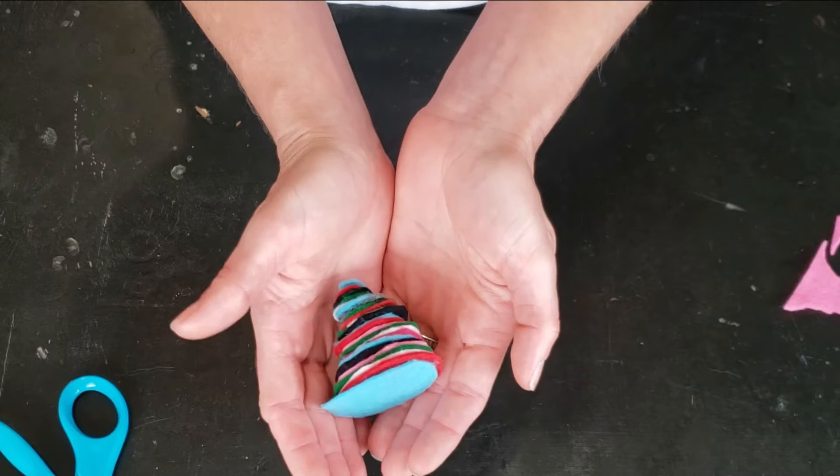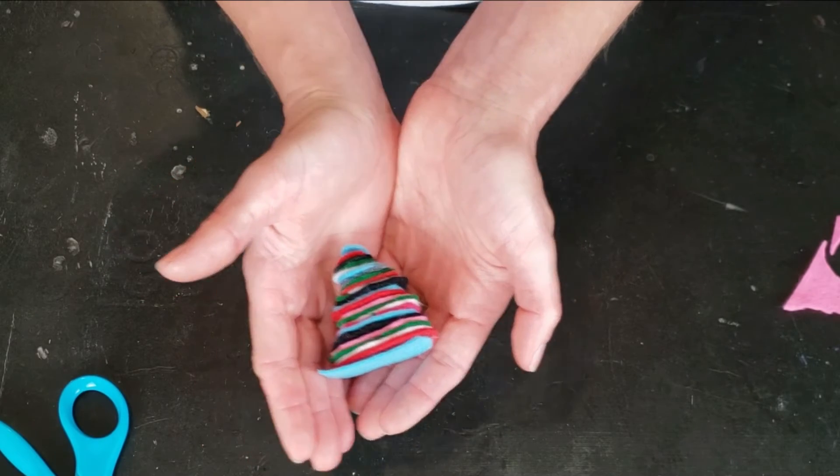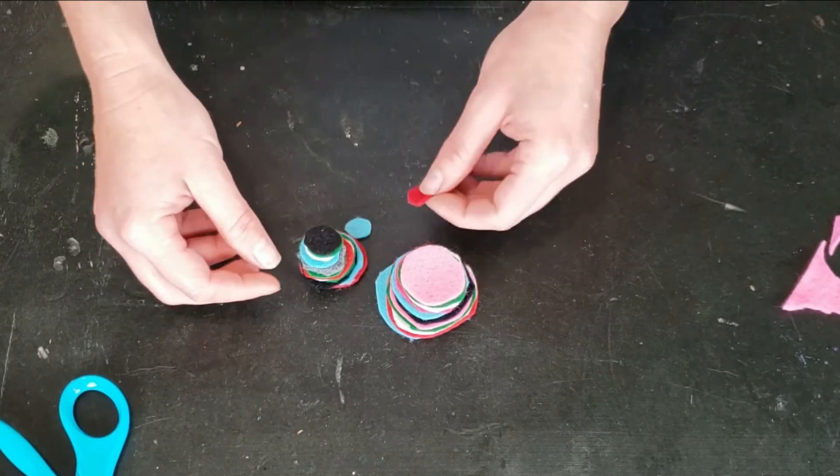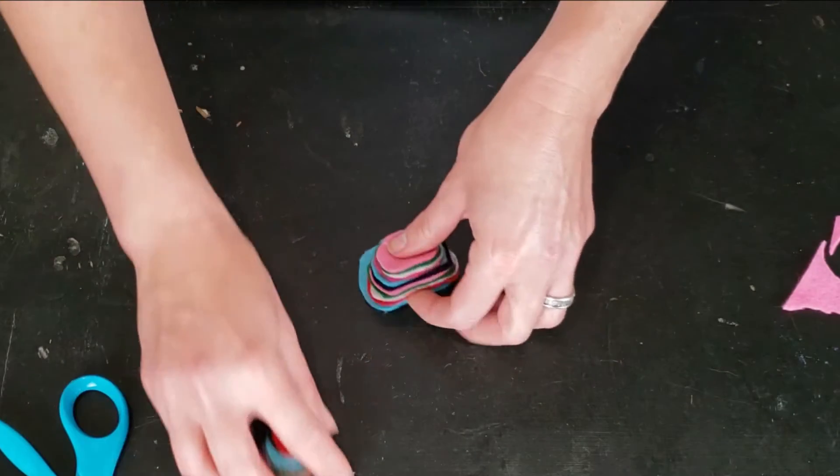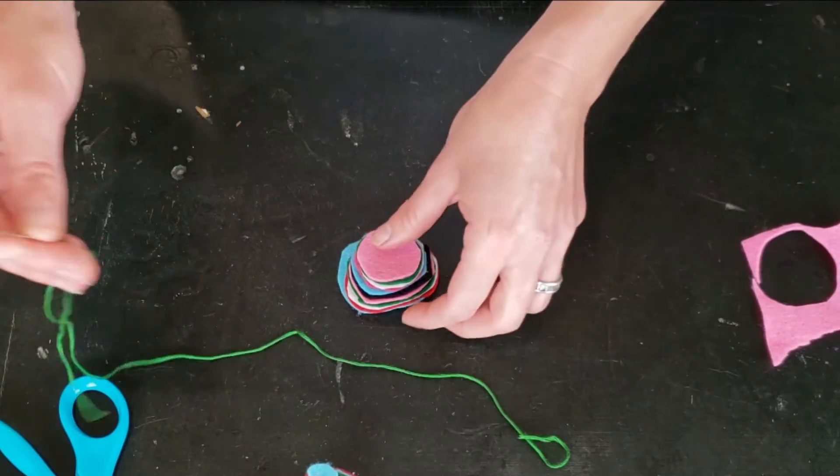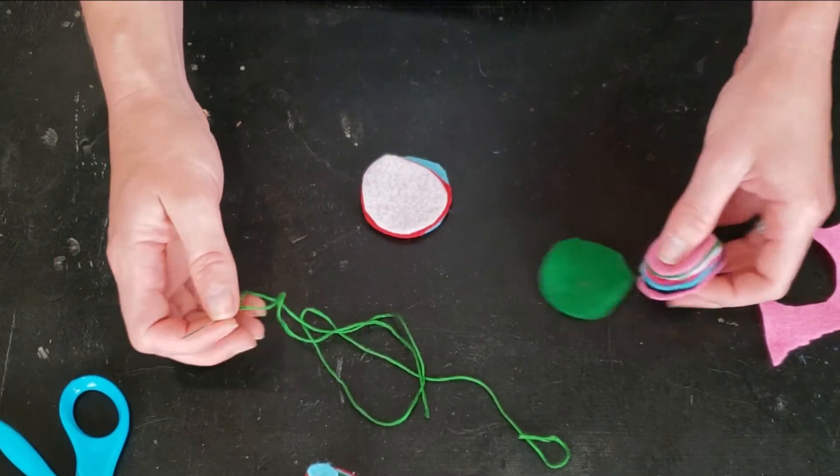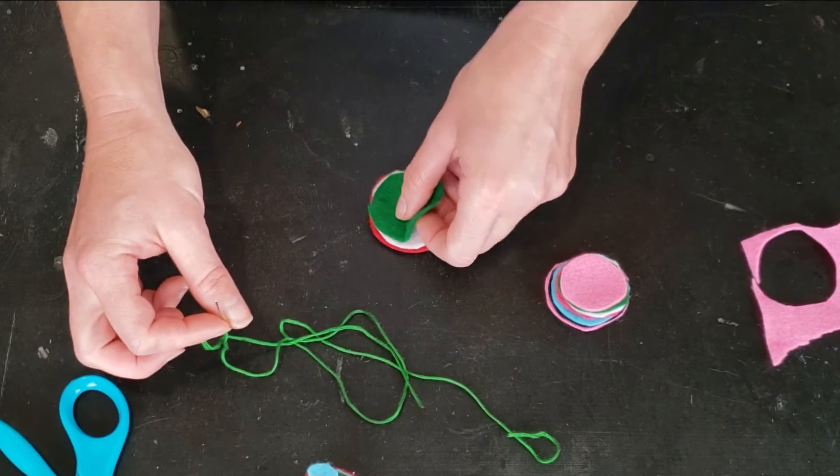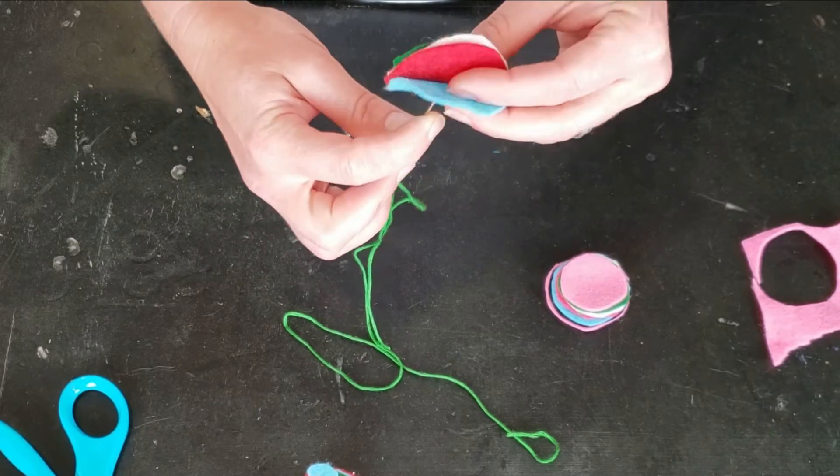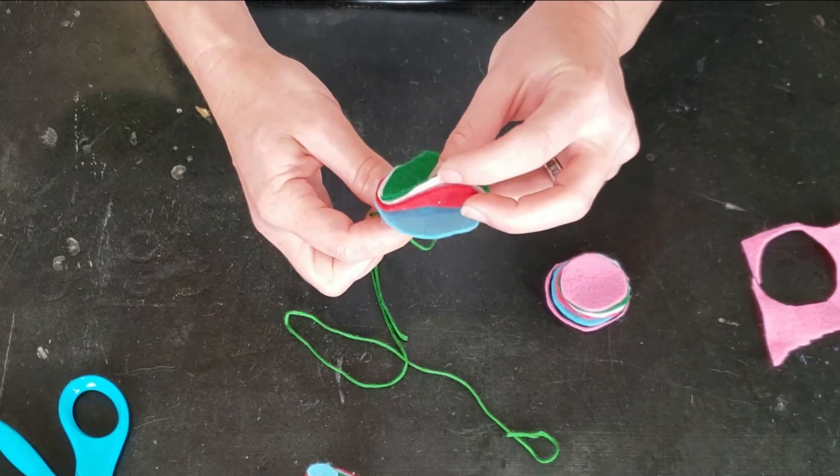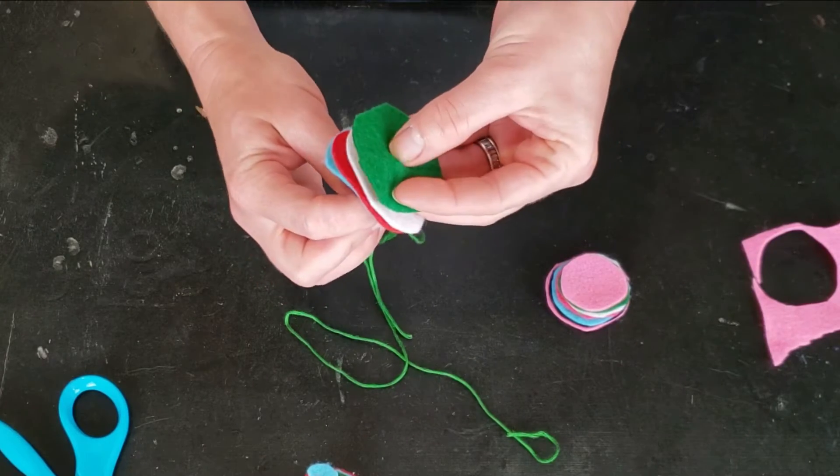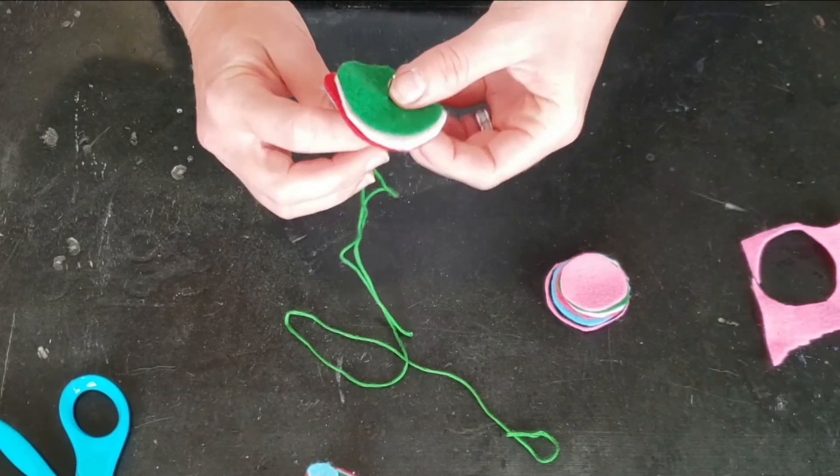Continue until you have sort of this conical shape of all the little felt layers. Then, to keep them together, because you can see they don't want to stay together, we're going to break them down into a few sections and thread them all together. Take your needle and thread, ask for help from your adult helper if you need help with this part, and then we're just going to go up through the stack of our felt layers.